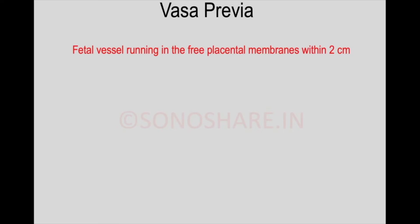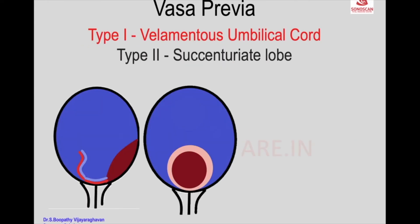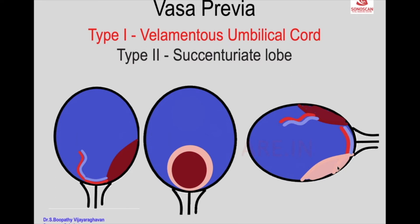The next condition is vasa previa, which is a fetal vessel running in the free placental membranes within 2 cm of the cervix, so that the vessels come in front of the internal os. It is a rare condition, occurring in one in 2,500. A succenturiate lobe crossing the internal os is one type — you see the main placenta with the cord insertion, and the vessels to reach the succenturiate lobe have to cross the internal os, resulting in vasa previa.